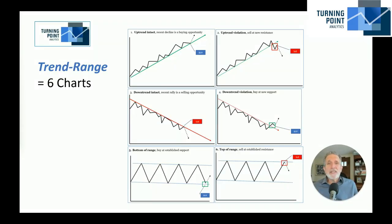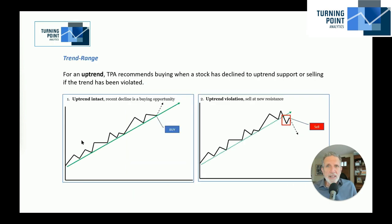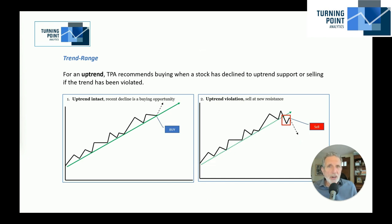Here are TPA's six charts, and I'll go into them in a little bit of detail right here. If a stock has trend strength and that trend strength defines it as being in an uptrend, there are two different conditions. One is that the stock has declined back to uptrend support, in which case it would be a buy.